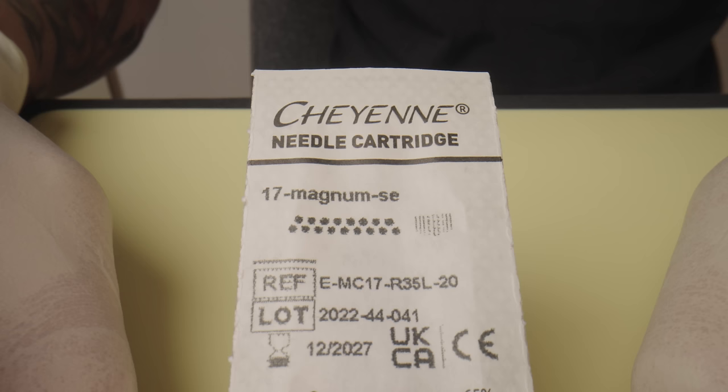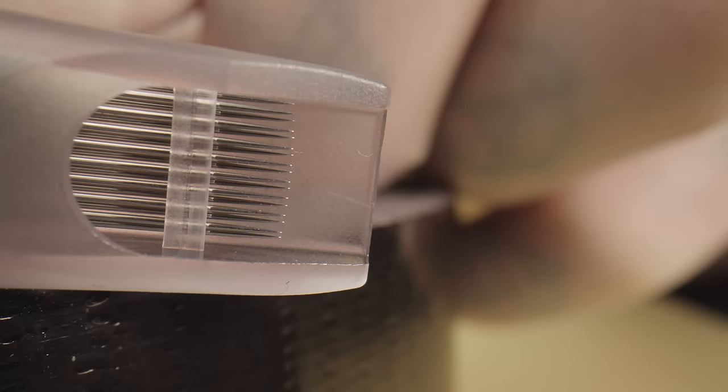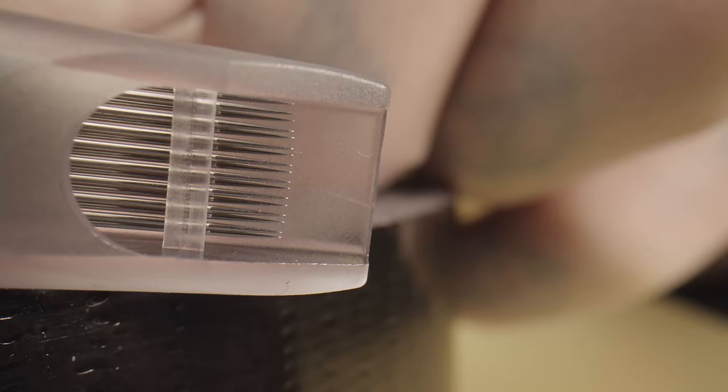For large shading areas, use a 17 Magnum Soft Edge by Cheyenne. These magnums have rounded edges for smooth shading.